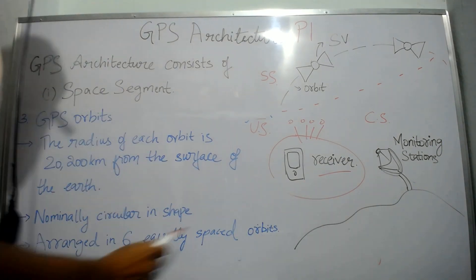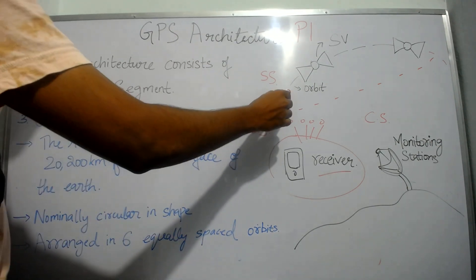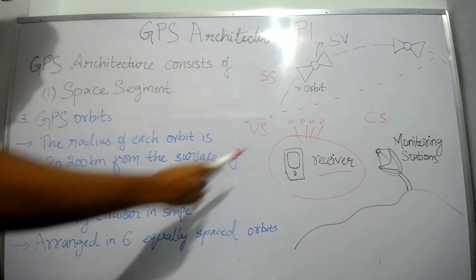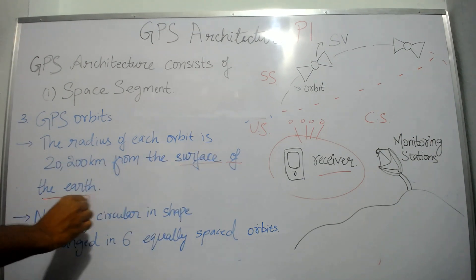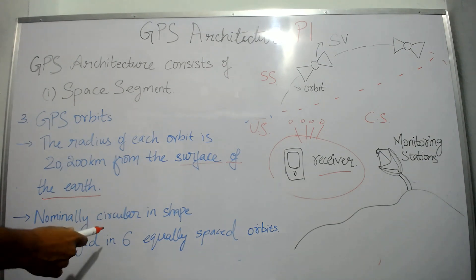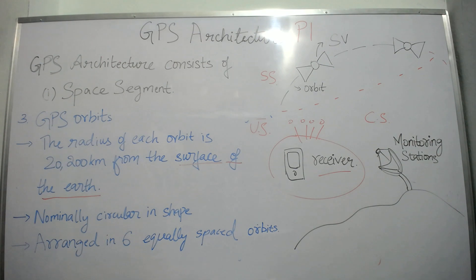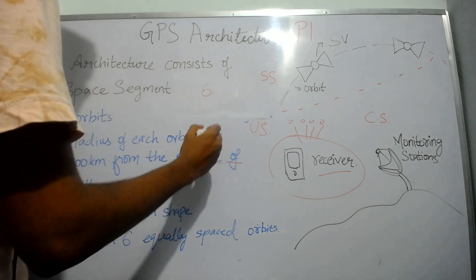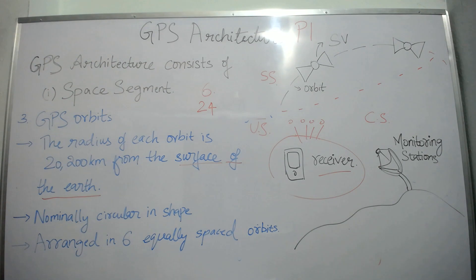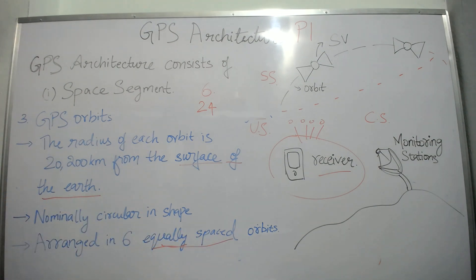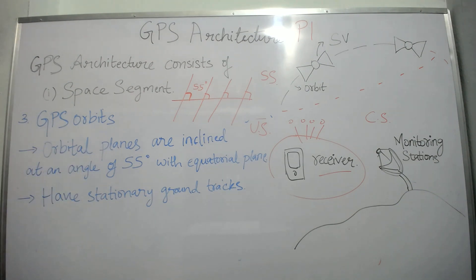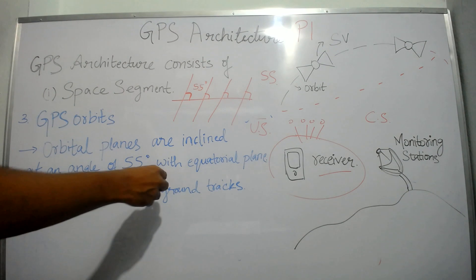Suppose this is the surface of the earth and this is the radius. The radius of each orbit is 20,200 kilometers from the surface of the earth. The orbits are nominally circular in shape, arranged in six equally spaced orbits. In the GPS system there are six orbits with 24 satellites, so these six orbits are equally spaced.